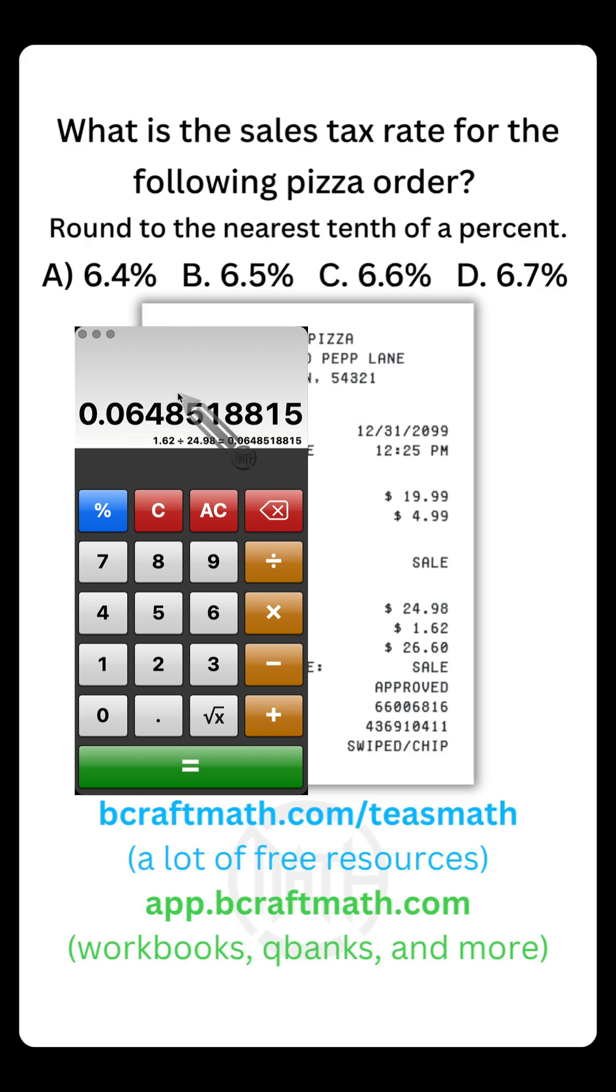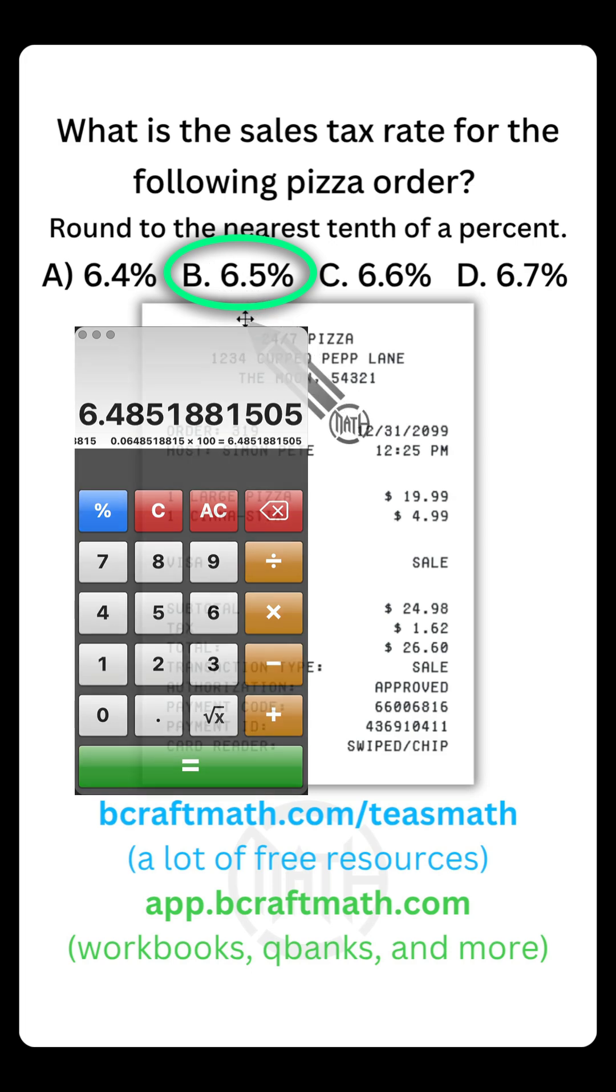This is the decimal representation. Move your decimal two places to the right, which is the same thing as multiplying by 100. And now we have our percentage, which means we can now round to the nearest tenth of a percent. The four is in the tenths place, and this four will go up to a five because the eight tells it to go up. So our sales tax rate is 6.5%. That is a way that we could have done it without even using our multiple choice answers.